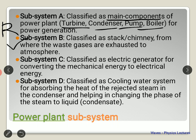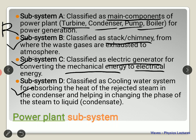Subsystem B is basically something which throws out the excess exhaust, connected with the stack or chimney. Subsystem C is the electrical generator — that's where we convert mechanical energy into electrical energy, which we discussed as the alternator last class. Subsystem D is classified as the cooling water system, which absorbs the heat of the rejected steam — the water is cooled down and then heated up again to generate more steam.